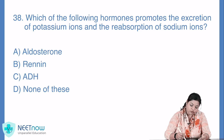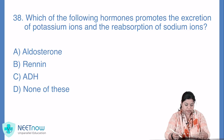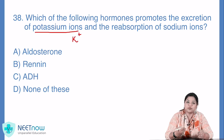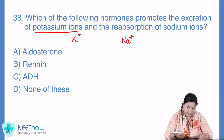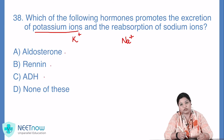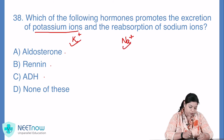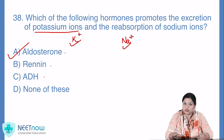Question number 38: which of the following hormones promotes the excretion of potassium ions and reabsorption of sodium ions? Kaun sa hormone hai jo potassium ions ka excretion promote karta hai, aur sodium ions ka reabsorption facilitate karta hai? Options: aldosterone, renin, ADH, none of these. Jaahan tak baat hai potassium ions ko excrete karne ki, sodium ions ko reabsorb karne ki — woh aapka karta hai aldosterone. Option A aapka yahan sahi hai.